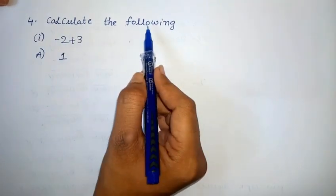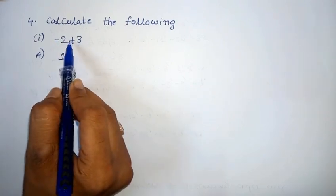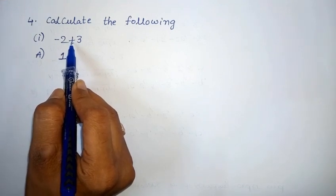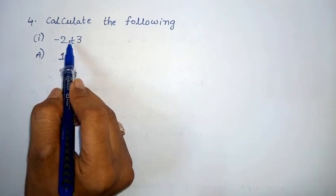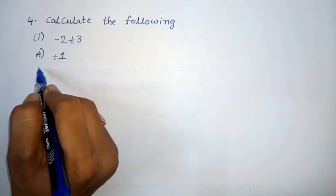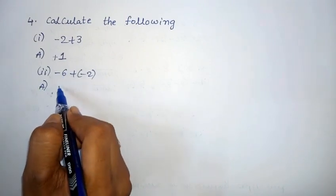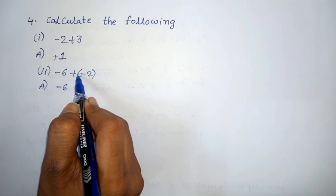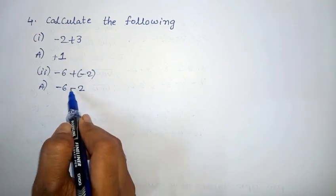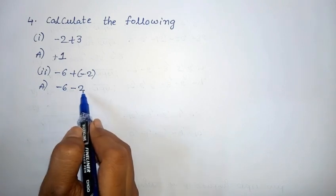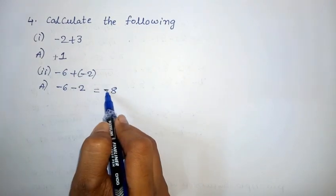4th Roman: Characterize the following. 1st one: minus 2 plus 3. The signs are minus and plus — opposite signs. When opposite signs appear, subtract: 3 minus 2 equals 1. The bigger number 3 has a plus sign, so the final answer is plus 1. 2nd one: minus 6 plus (minus 2). Plus bracket minus becomes minus 2. Both signs are minus — same signs add: 6 plus 2 equals 8. Both are minus, so the answer is minus 8.